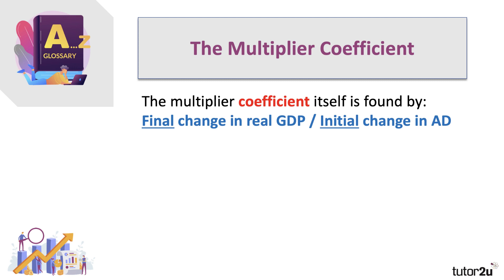The multiplier coefficient is found by the formula: the multiplier equals the final change in real GDP divided by the initial change in the component of aggregate demand. Unlike elasticity, we're not dealing in percentage changes — we're dealing in whole numbers. The change in GDP divided by the change in demand gives us a coefficient, which is just a number.